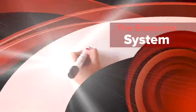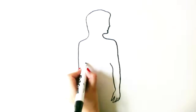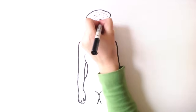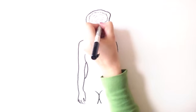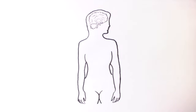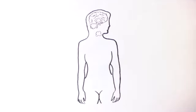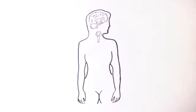Today we're going to be talking about the endocrine system. What is the endocrine system? First of all, endo refers to inside, and crine means to secrete. The endocrine system regulates body activities in order to maintain homeostasis.